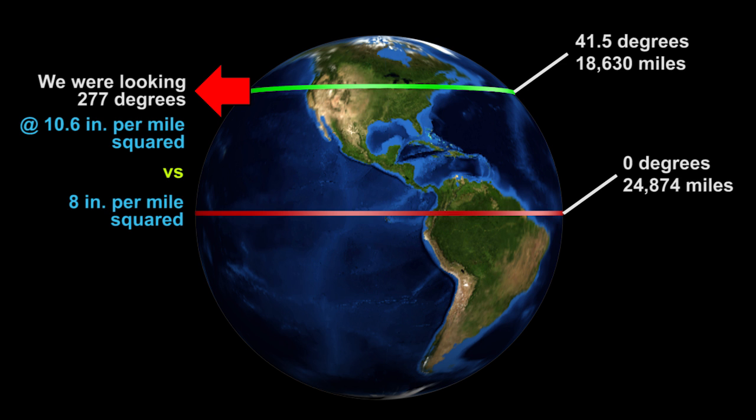The math everybody's using — roughly 8 inches per mile squared — is based on the roughly 25,000-mile circumference ball. We aren't looking on that circumference though. So our math came out to about 10.6 inches per mile squared. In other words, we had a much greater curvature that should have been expected at the location from which we were doing our observations.